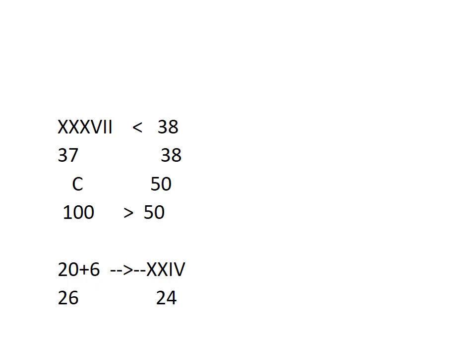Next: X, X, V, I, I. X means 10, 20, 30, plus 5 = 35, plus 1 = 36, plus 1 = 37. And the other side gives 38. Which one is greater? 38 is greater. That's why the mouth will come towards 38. Next: C and 50. C means 100 and 50. Which one is greater? C is greater, 100. Last one: 20 plus 6 = 26, and 10 plus 10 = 20, plus 4 = 24. Which one is greater? 26 is greater and 24 is smaller.